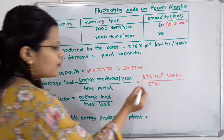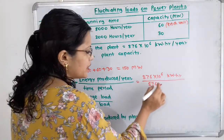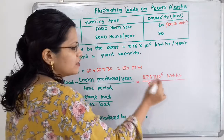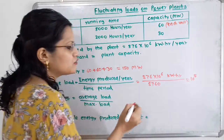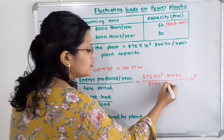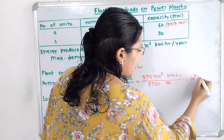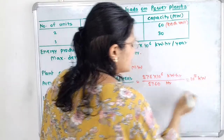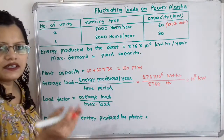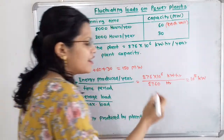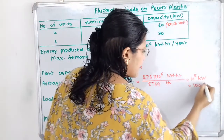Now, if we observe, 876 in the numerator and 876 from 8760 cancel out, leaving 10 in the denominator. So we get 10^5 kilowatt. The hour units cancel, giving 10^5 kilowatts. Converting to megawatt, that is 100 megawatt. So, average load = 100 MW.